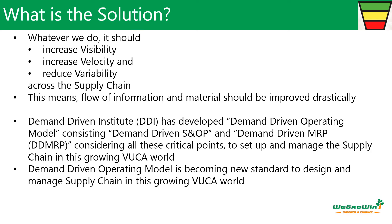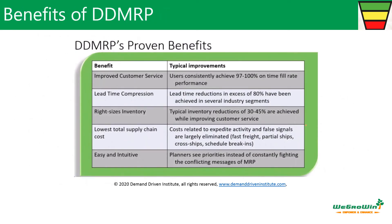The Demand Driven Institute has developed the demand-driven operating model, consisting of demand-driven S&OP and demand-driven MRP, considering all these critical points. The demand-driven operating model has become a new standard to design and manage supply chains in this growing VUCA world. DDMRP has proven benefits: it improves customer service, drastically compresses lead times, right-sizes inventory to release capital, lowers supply chain costs, and reduces complexity for planners and buyers, making people more productive.